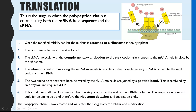This continues: the ribosome moves along, the next tRNA molecule with a complementary anticodon aligns, and the previous tRNA detaches and can be reused. This happens over and over until the ribosome reaches the stop codon at the end of the mRNA molecule. The stop codon is the last three bases on the mRNA. These three bases do not code for an amino acid, so there is no corresponding anticodon on a tRNA molecule. As a result, this causes the ribosome to detach from the mRNA, ending translation.